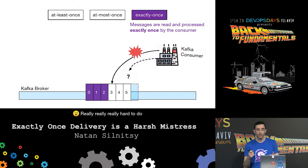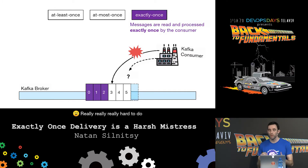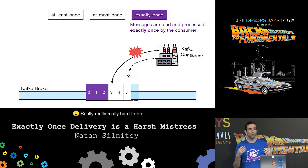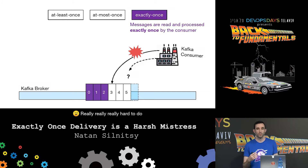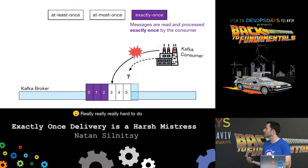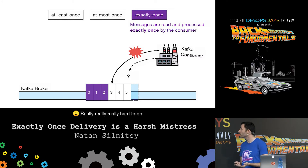With at-most-once on the consumer side, we first commit the message and only then do the processing. This is helpful for scenarios where you don't care if some messages are dropped - for example, sending users text message reminders where you don't want duplicates, and if once in a while they don't get a reminder it's not a big deal. If we retry, we start from the next message, so no double processing but you can get message loss. But classically what we really want is exactly once.